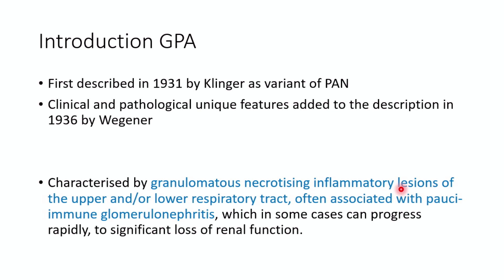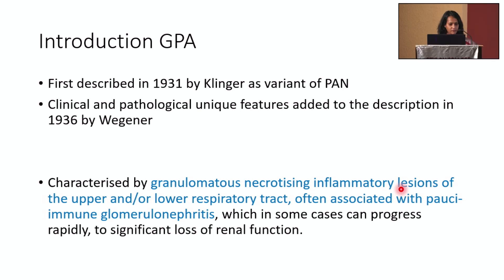GPA as a disease entity was first described in 1931 by Klinger as a variant of polyarteritis nodosa. However, the pathognomonic clinical and pathological features were added in 1936 by Frederick Wegener. After that, this disease entity was named Wegener's granulomatosis. However, it is no longer called that. If you look up GPA — granulomatosis with polyangiitis — most texts describe it as a rare systemic disease characterized by granulomatous necrotizing inflammatory lesions in the respiratory tract, often associated with polyarteritis. What I highlighted here is the common and classic presentation of GPA.